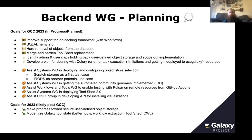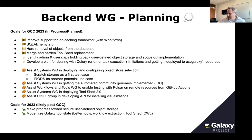The backend plans include working with the UI/UX group on developing APIs for installing visualizations, making more progress towards a secure user-defined object store, and the modernizing Galaxy tool state project, which is going to revolutionize everything about the backend — better tool execution, better workflow extraction, more useful tool shed, better tooling around tools, and it's going to allow CWL. That's the backend — amazing progress across the board.